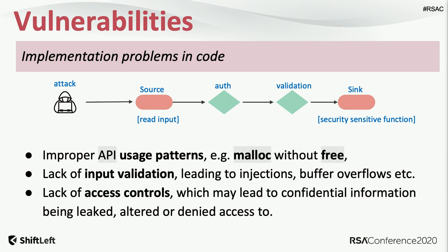Problems often arise due to improper usage patterns of specific APIs. For example, if you're allocating memory and not freeing it, someone could initiate a brute-force denial-of-service attack. Or if your validation routines are not strong enough, someone could bypass them and induce an injection or buffer overflow attack. Finally, if you're echoing back certain parameters in your response, an attacker can leverage that to understand the characteristics of your application and move to the next step.